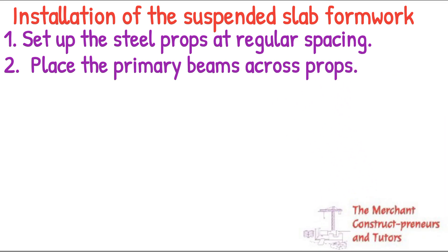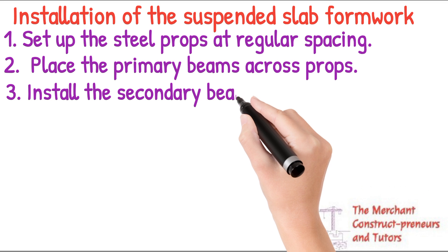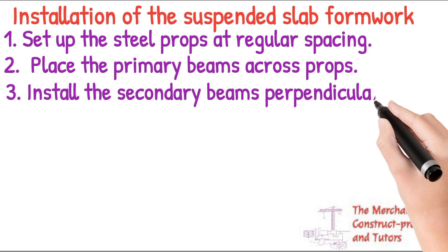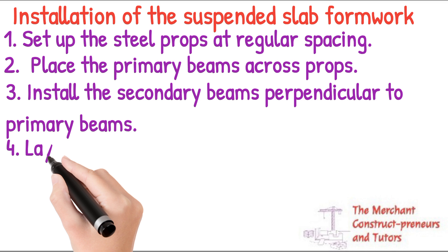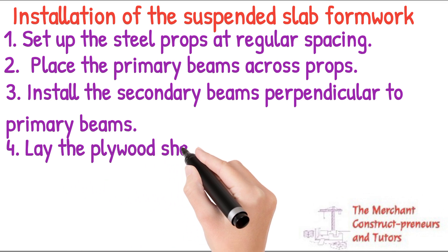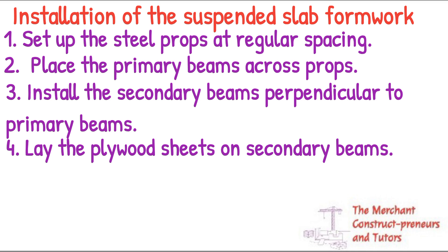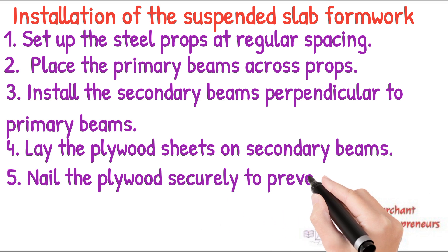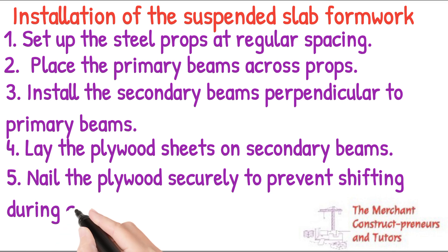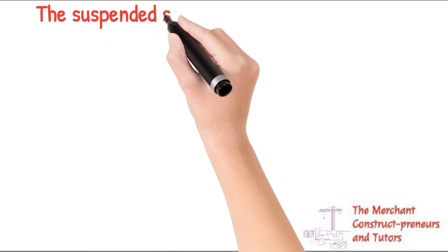The first step is to set up your aqua props — in some cases they use bamboo, just anything vertical that can support your slab. The second step is to place the primary beams across the props. The third is to place the secondary beams perpendicular to the primary beams — so you have two layers of wooden beams, one in each direction. Then lay the plywood sheets on the secondary beams, and finally nail the plywood to fasten it to the beams.